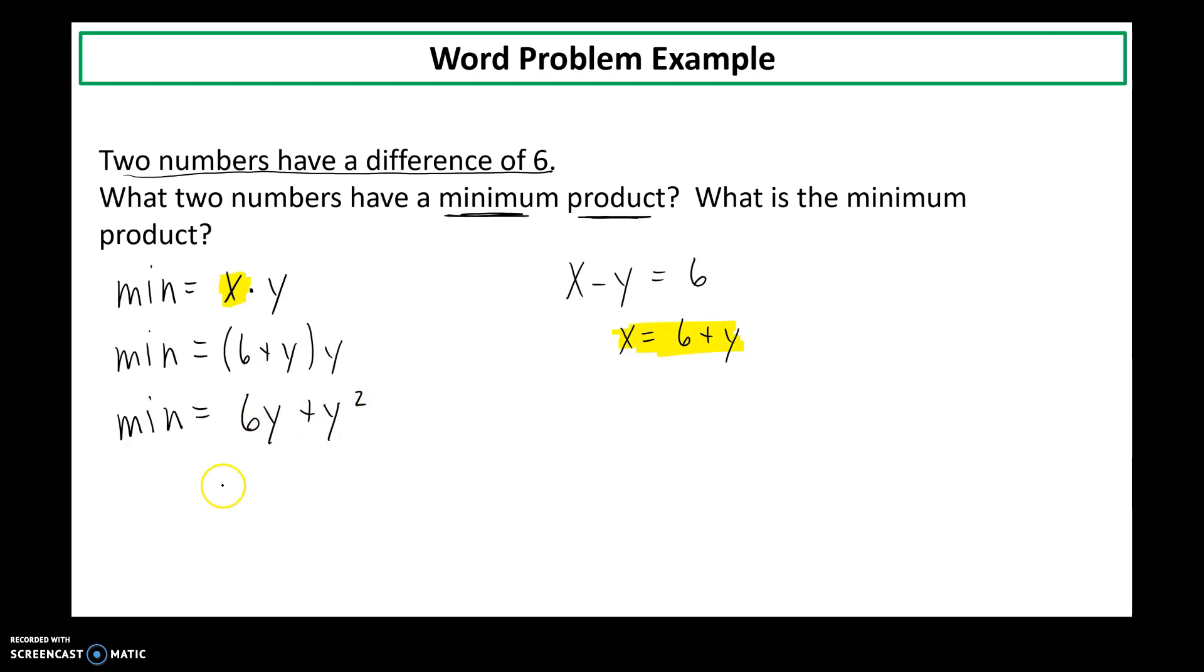Now that it's a quadratic, I can find the vertex. My variable here is y, opposite of b, all over 2a.